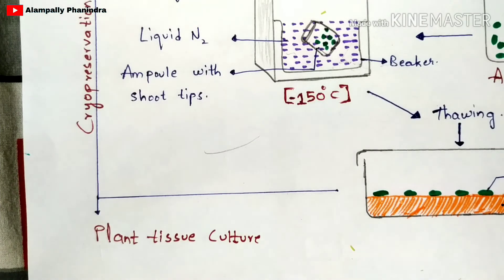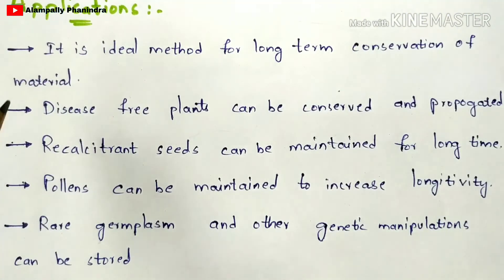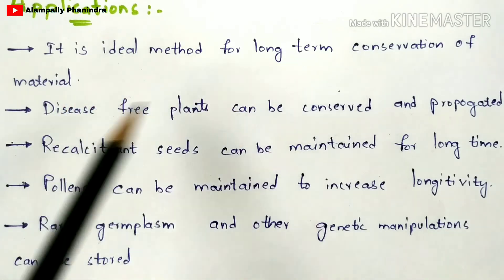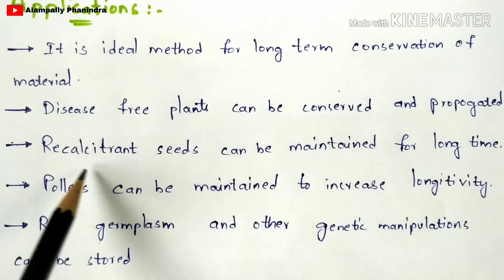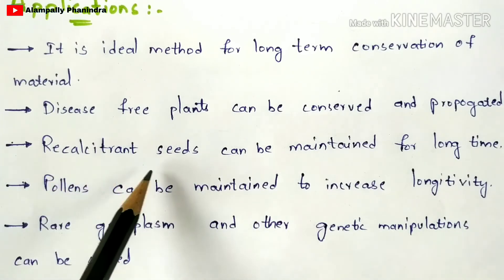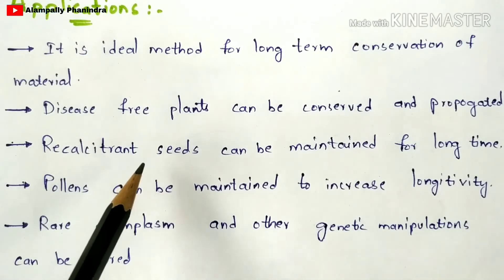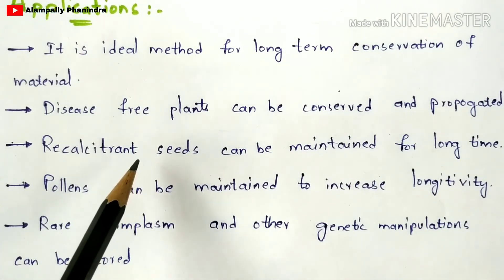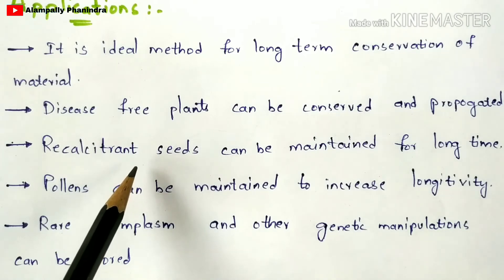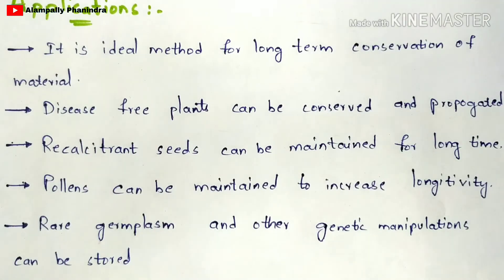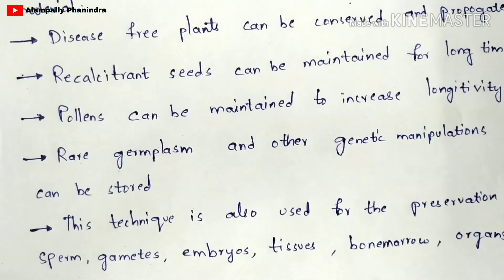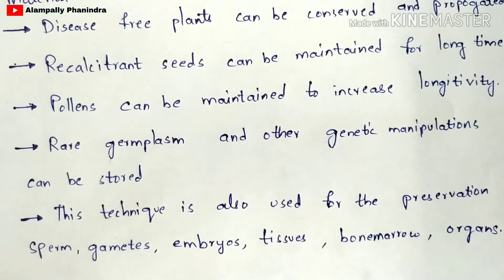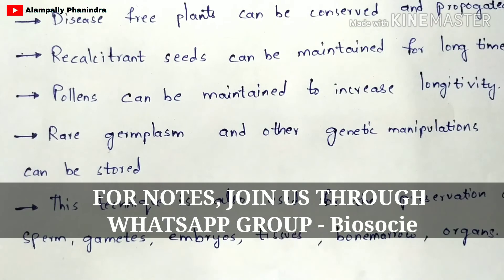Now let us discuss the applications of cryopreservation. It is an ideal method for long-term conservation of material. Disease-free plants can be conserved and propagated. Recalcitrant seeds — which are special seeds that can exhibit life only in cool environments and cannot survive or germinate at high temperatures — can be maintained long-term. Pollens can be maintained to increase longevity. Rare germplasm and other genetic materials can be stored. This technique is also used for preservation of sperms, gametes, embryos, tissues, bone marrow, and organs, coming under animal biotechnology.